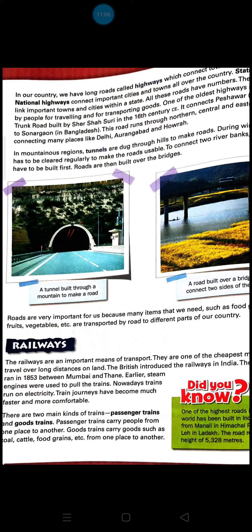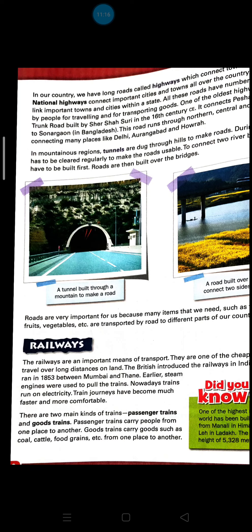Now let's look at railways. Railways are an important means of transport — one of the cheapest means to travel over long distances on land. If you travel by bus or personal vehicle over a long distance, the cost of petrol and diesel makes it expensive. Railways are cheaper, though a little time-consuming, but you can travel long distances easily.